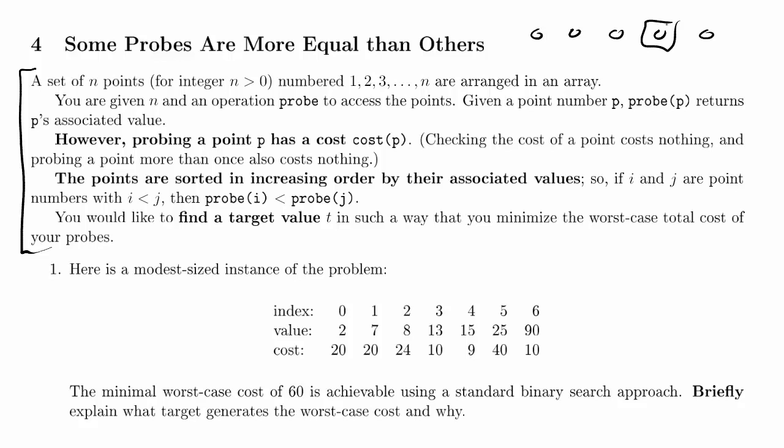Checking the cost of a point costs nothing, so we know the costs beforehand. Probing a point more than once also costs nothing, which makes sense.